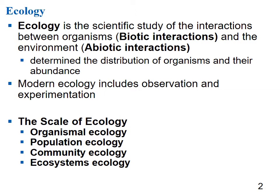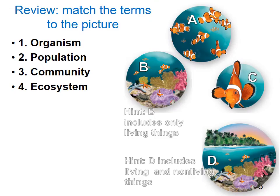Modern ecology includes both observation and experimentation, and there are different scales of ecology: organismal ecology, population ecology, community ecology, and ecosystem ecology. Let's review using some pictures of clownfish and the environment. We'll match the pictures to organism, population, community, and ecosystem.